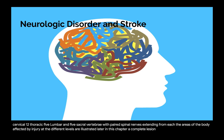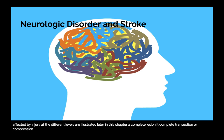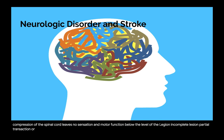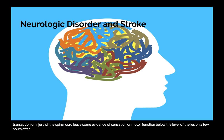A complete transection or compression of the spinal cord leaves no sensation or motor function below the level of the lesion. Partial transection or injury of the spinal cord leaves some evidence of sensation or motor function below the level of the lesion. Some sensation and motor function may return within a few hours after injury, and maximum return may occur in 6 to 18 months.